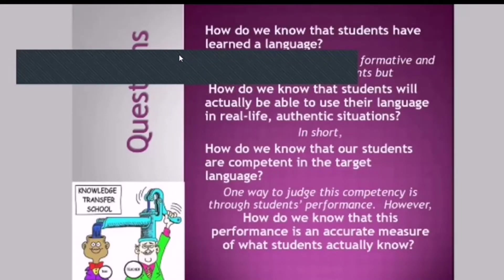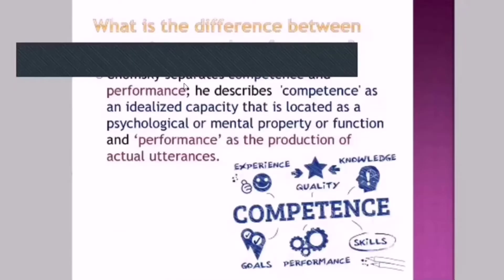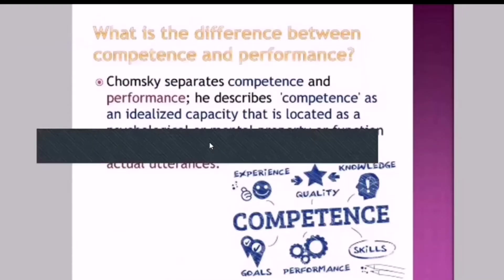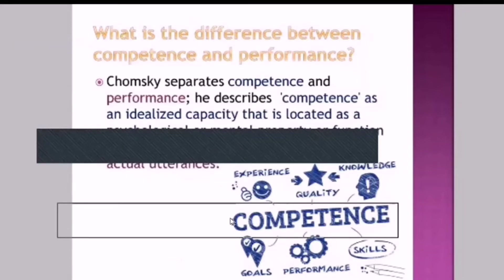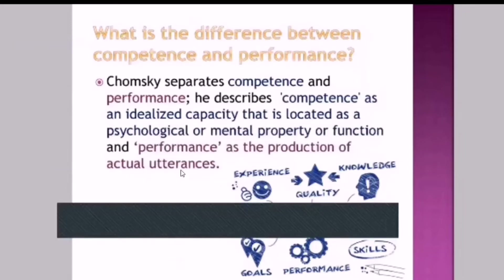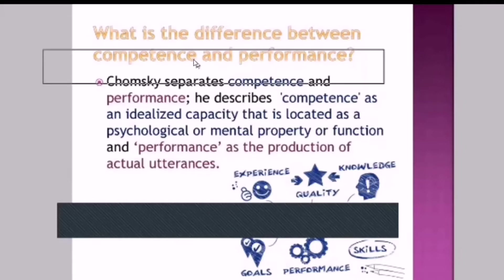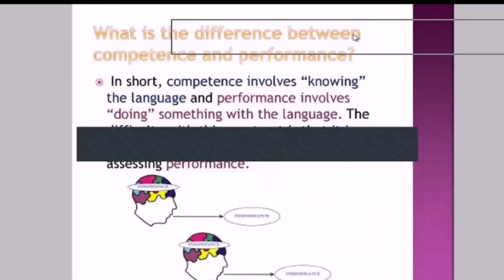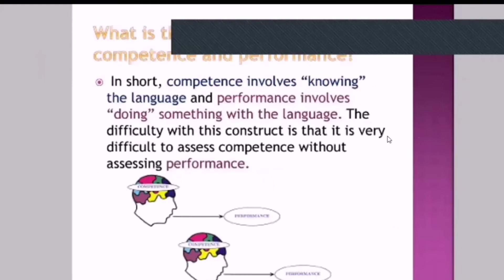How do we know that this performance is an accurate measure of what students actually know? Chomsky separates competence and performance: he describes competence as an idealized capacity located as a psychological or mental property or function, and performance as the production of actual utterances. In short, competence involves knowing the language, and performance involves doing something with language. The difficulty with this construct is that it is very difficult to assess competence without assessing performance.